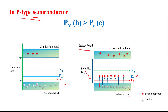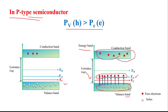Due to this, the valence band is filled with a large number of holes, and the acceptor energy level has a large number of electrons as compared to the valence band. Due to this, in P-type semiconductor material, the probability of holes in the valence band is greater than the probability of electrons in the conduction band, and the Fermi level lies near the valence band or near the acceptor energy level. This is the basic fundamental of Fermi level in P-type semiconductor material.